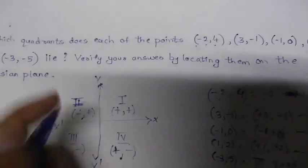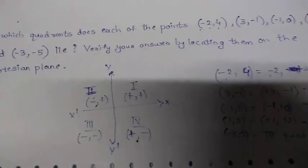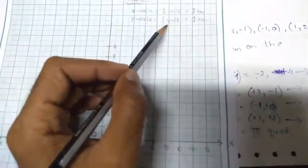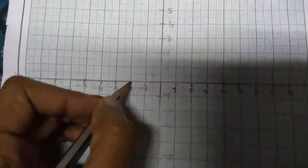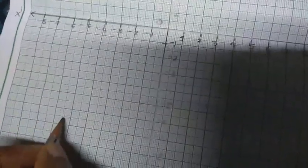The question also asks us to verify by locating the points on the Cartesian plane. I have a graph here with the x and y axes plotted and the scale set to 1 unit = 1 centimeter for both axes. We will plot the points and verify. For (−2, 4): take minus 2 on the negative x-axis and go 4 steps above — 1, 2, 3, 4. This point lies in the 2nd quadrant, which matches our answer. We can label the quadrants 1st, 2nd, 3rd and 4th.